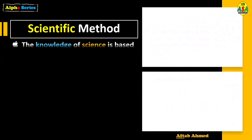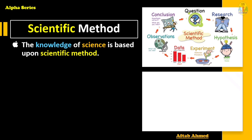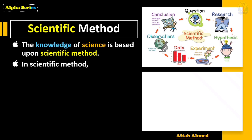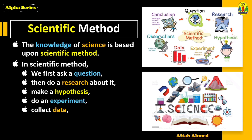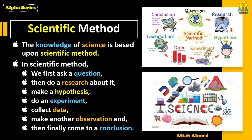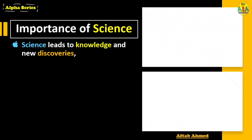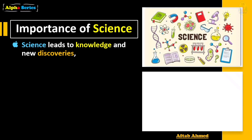The knowledge of science is based upon a method known as the scientific method. In the scientific method, we first ask a question about a problem, then do research about it, make a hypothesis, do an experiment, collect data, make another observation, and then finally come to a conclusion. These are the different steps through which we come to know the actual reason behind a phenomenon.